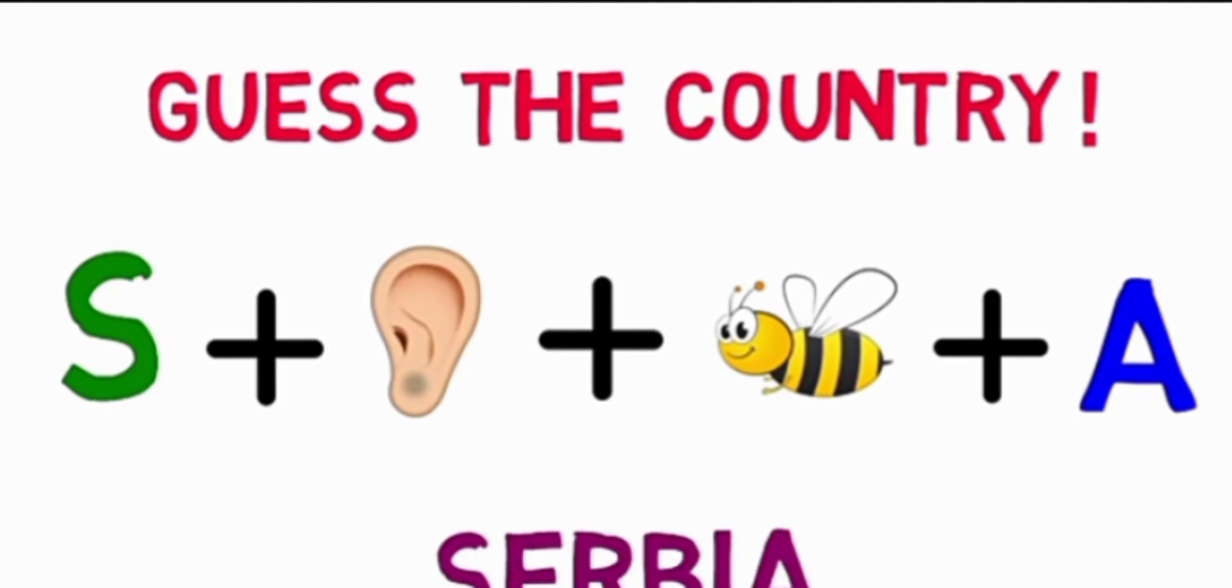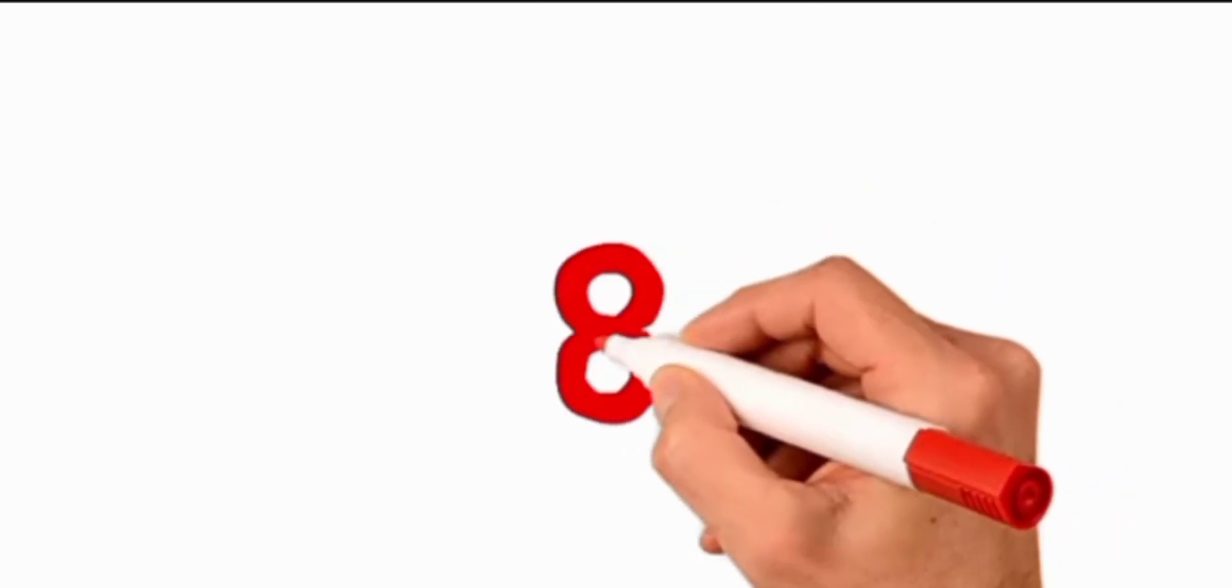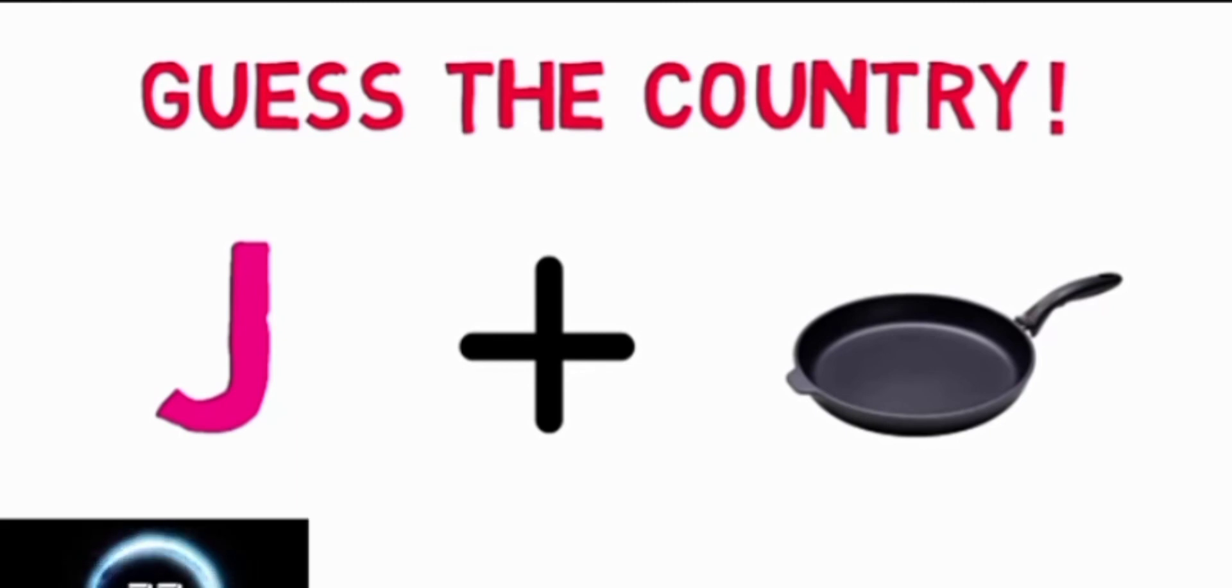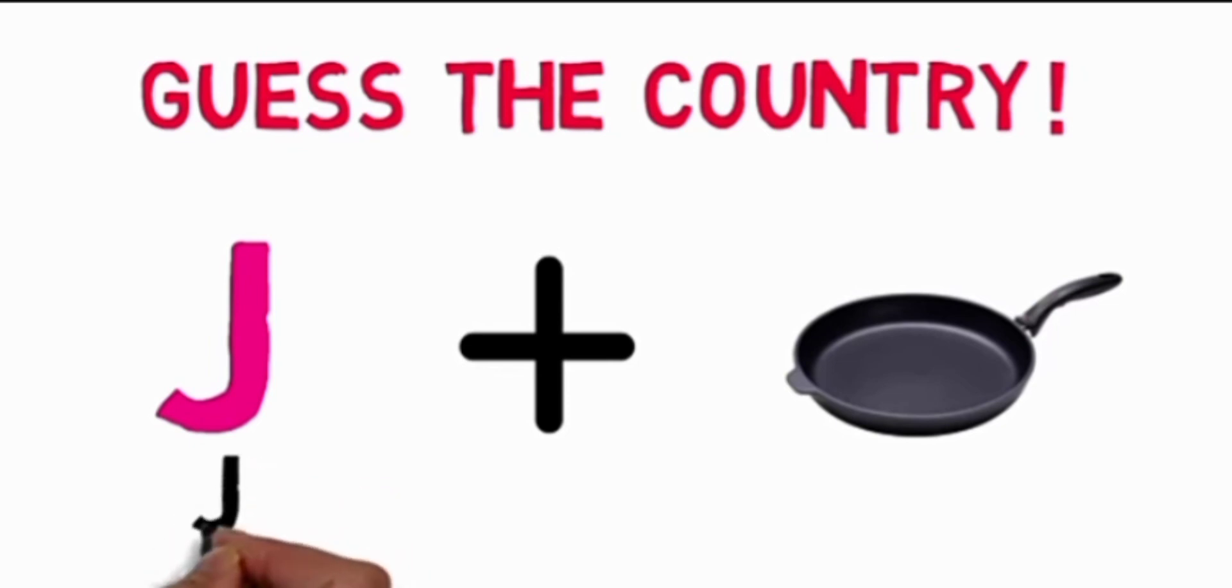Number eight is letter J plus a pen—this is too easy. Countdown has begun, few seconds are left. Letter J plus a pen, so this is Japan. So easy.